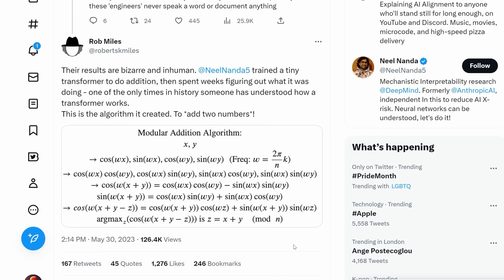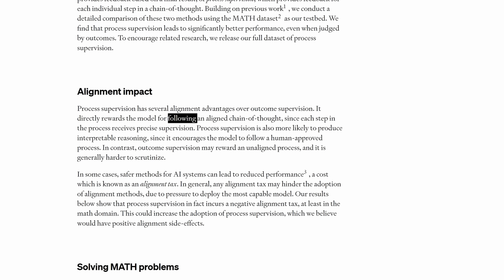One of the only times in history someone has understood how a transformer actually works down to the level of weights and activations. And this is the algorithm it created to add two numbers. It thought of basic addition in terms of a rotation around a circle. And of course, if you asked it, why is one plus one two, it would never give you this as an explanation of its methodology. But maybe this is what it's actually calculating. That's why I'm personally a little bit skeptical when OpenAI say that this form of process supervision directly rewards the model for following an aligned chain of thought.